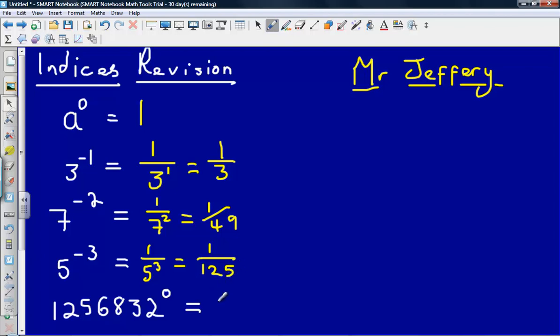Last one, just to kind of reinforce the point that anything to the power of zero gives us one. Here I've got one million two hundred and fifty-six thousand eight hundred and thirty-two to the power of zero, and that still gives us an answer of one.